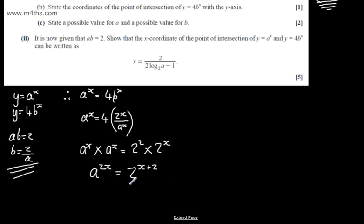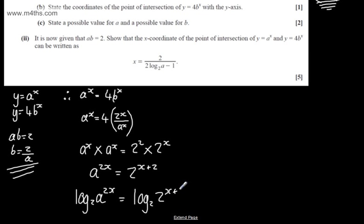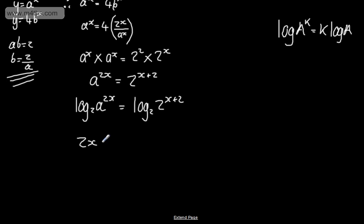I'm now going to take logs of both sides using base 2. Log to the base 2 of a to the 2x equals log to the base 2 of 2 to the x plus 2. Using the power law — if I have log of a to the power of k, I can write this as k log a — I apply that to the left hand side, giving 2x times log base 2 of a equals x plus 2. Log base 2 of 2 is just 1, so the right hand side is x plus 2.